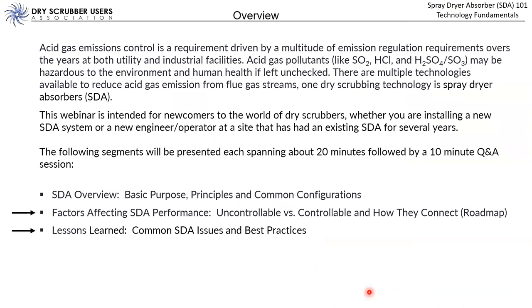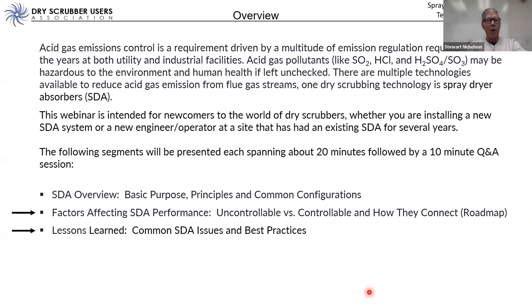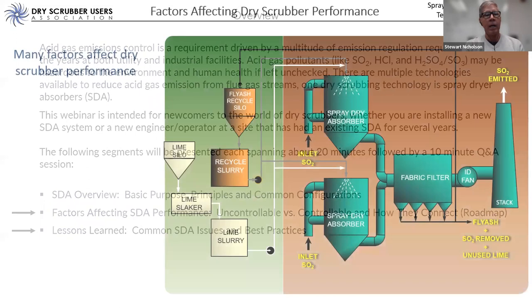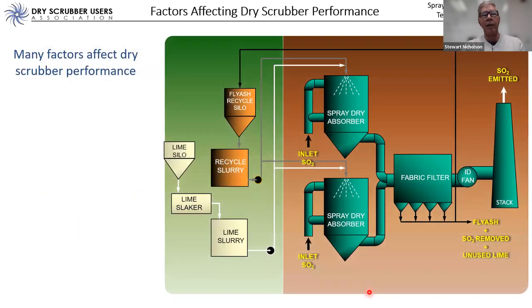We'll talk about approach to saturation, explain what that means and why it matters. John is going to pitch in to give the more practical perspective from plant personnel. Many factors affect dry scrubber performance — those three things we're interested in (lime consumption, material accumulation, and corrosion) are affected by dozens of factors. But most of these we have no practical control over.